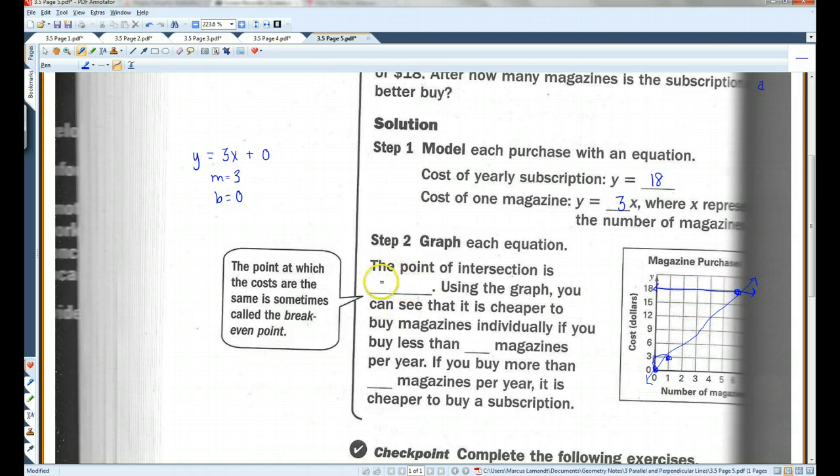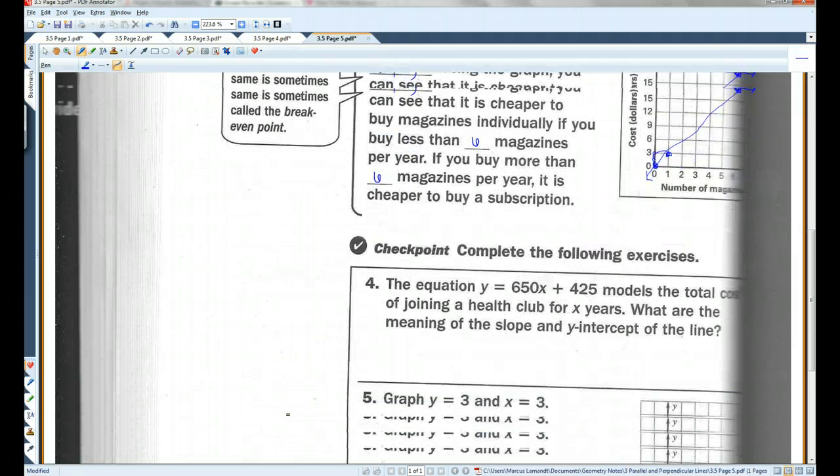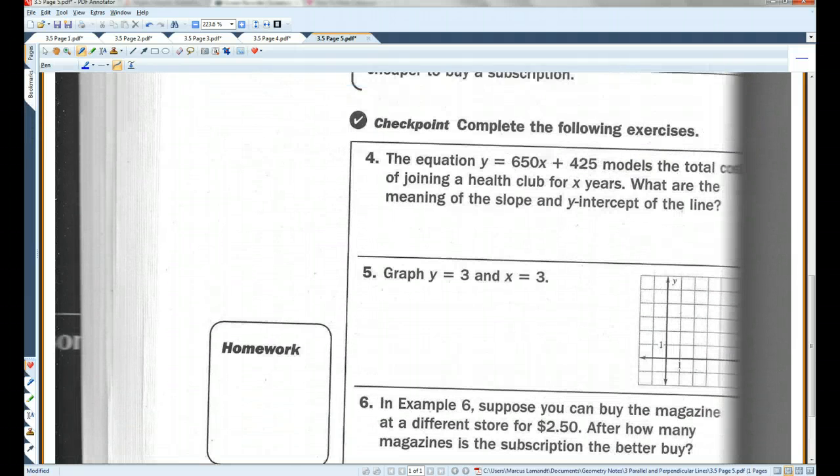Okay. The point of intersection is 6, 18. Using the graph, you can see that it is cheaper to buy magazines individually if you buy less than 6. So, if you buy 5 magazines, you're only going to pay $15. If you buy 7 magazines, you're going to pay $21. So, it's a better deal to pay the $18 annual fee. Okay. If you buy more than 6 magazines per year, it is cheaper to buy a subscription. Alright. I'll let you guys do the checkpoint. And that's all.